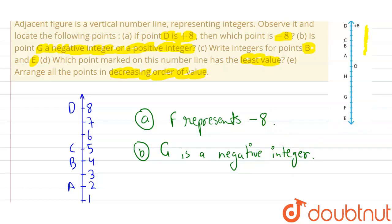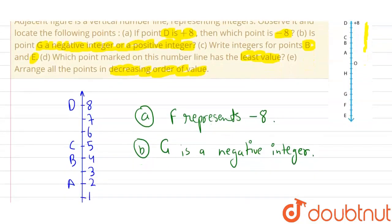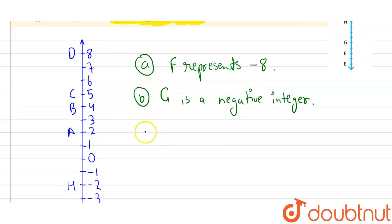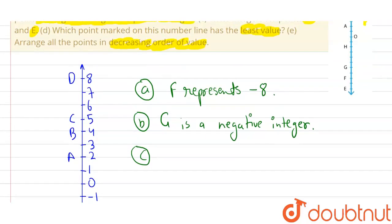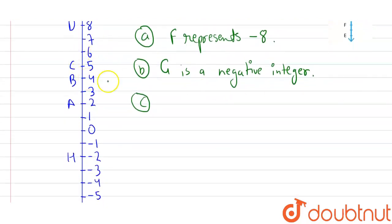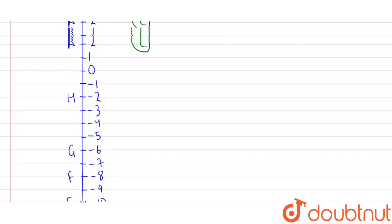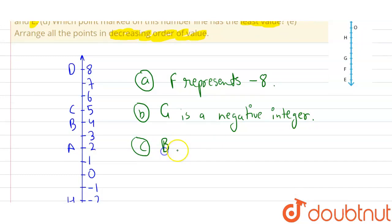Now, let's see the C part, which is: write integers for points B and E. So for points B and E, as you can see that B represents 4 and E represents -10. Therefore, B represents 4 and E represents -10.